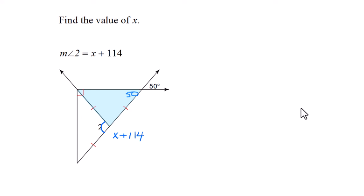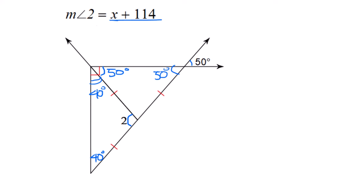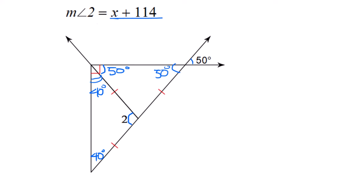The angle across from 50 is vertical, also 50. This triangle is isosceles, so base angles are congruent. Both are 50. Now at the right angle, if part is 50, the other part is 40. In this isosceles triangle, if that's 40, the bottom is also 40.